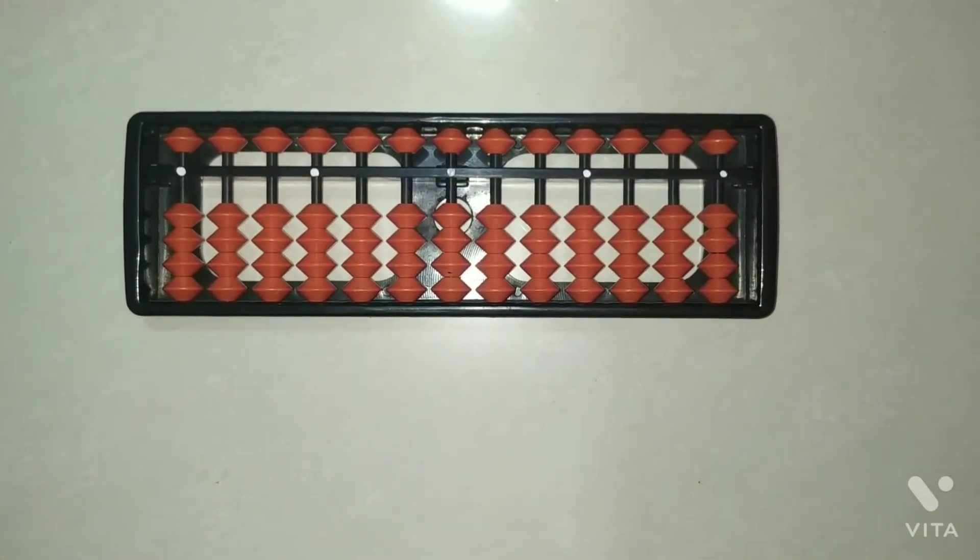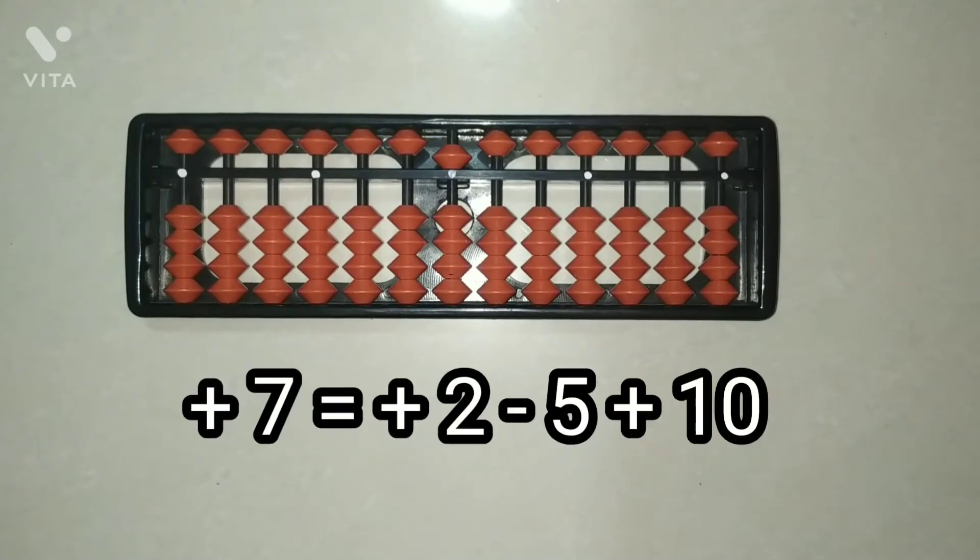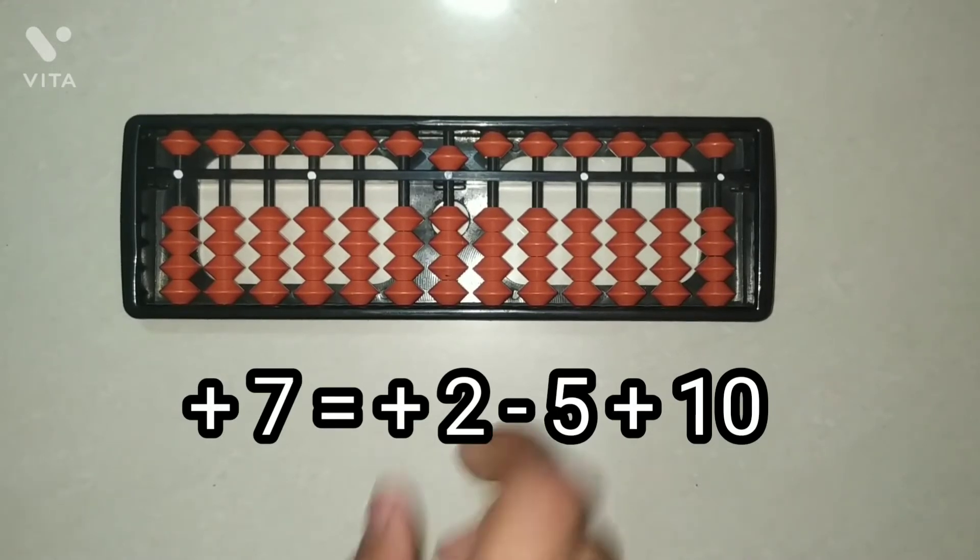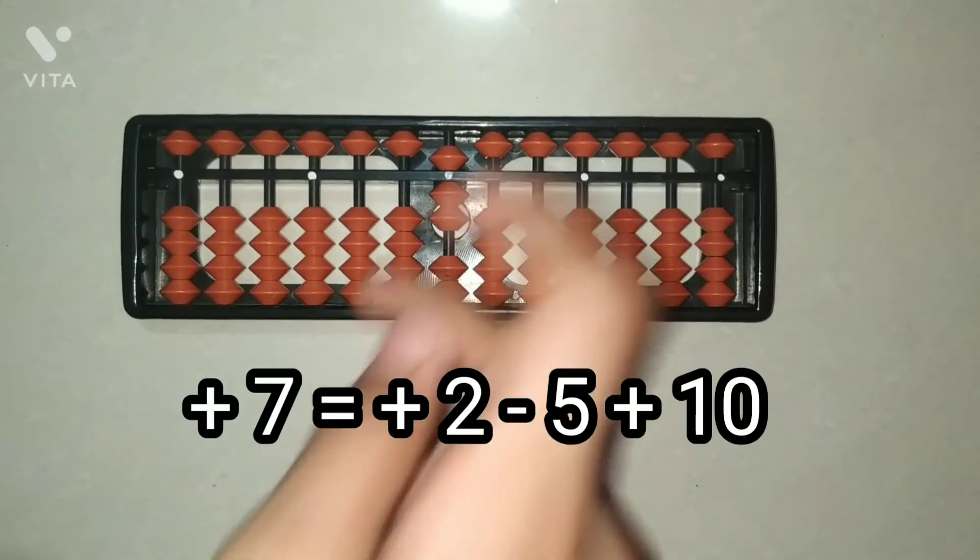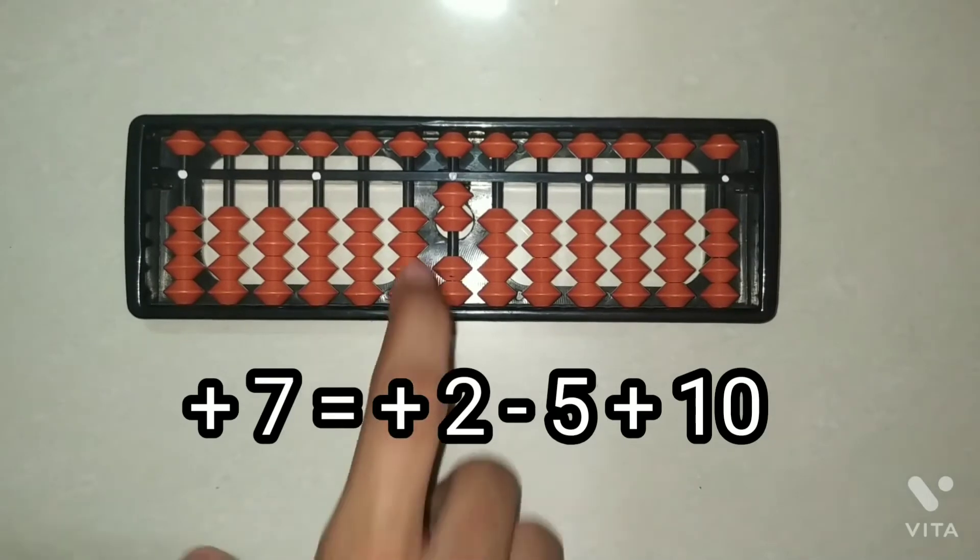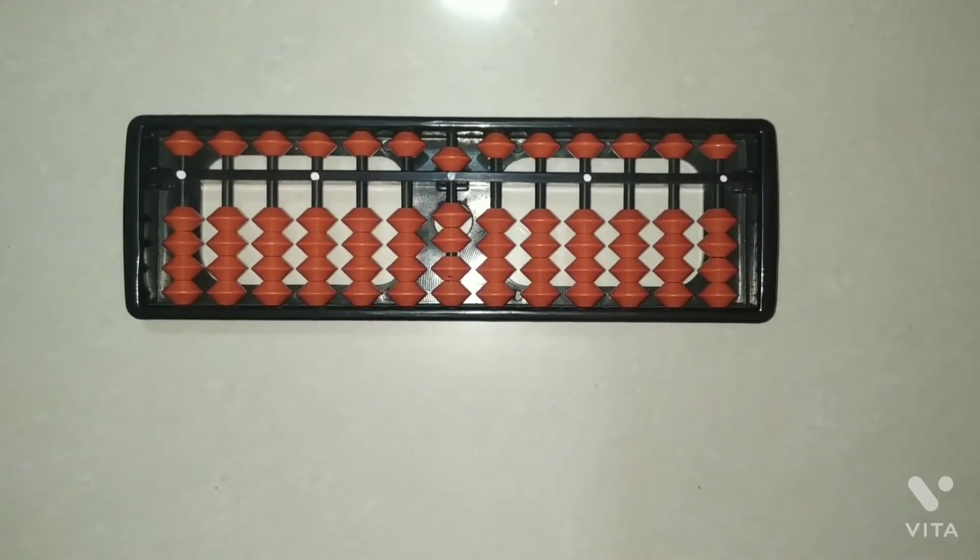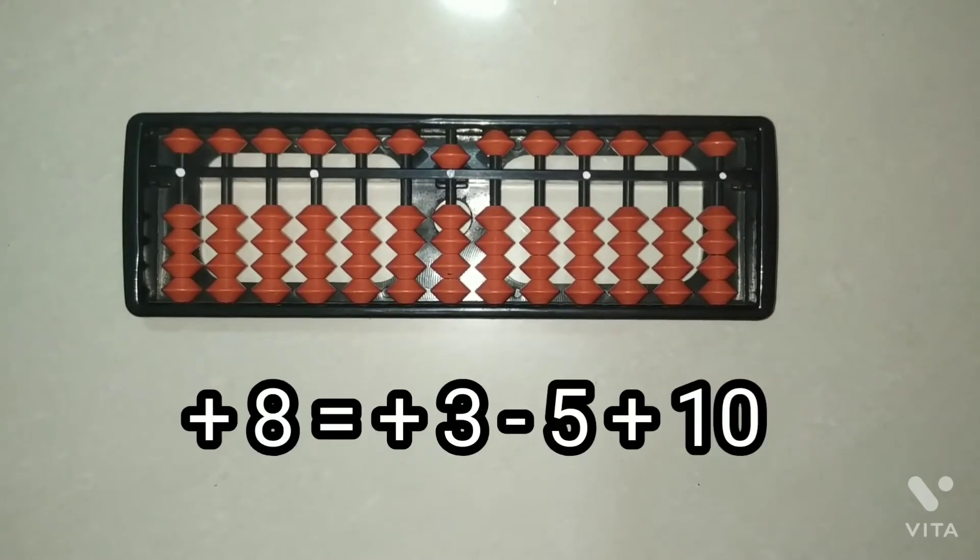Now some questions. Here is 5 and we have to add 7 in the 5, so we will add 2 minus 5 and add 10. Like that, now we have also a 5 and we have to add 8 in the 5.